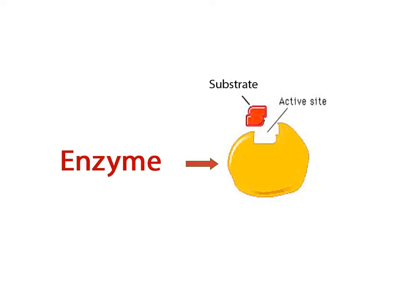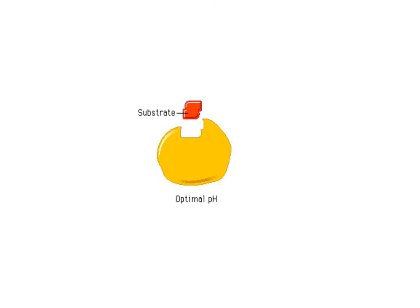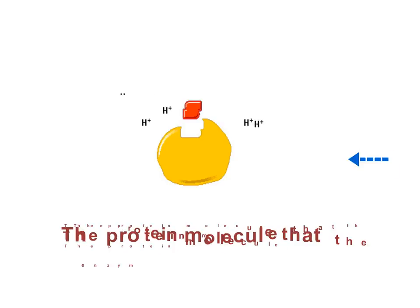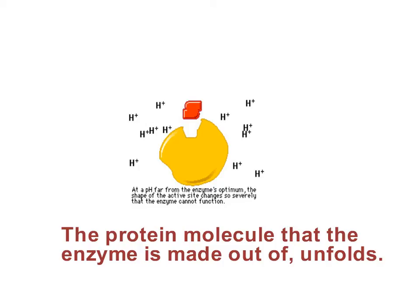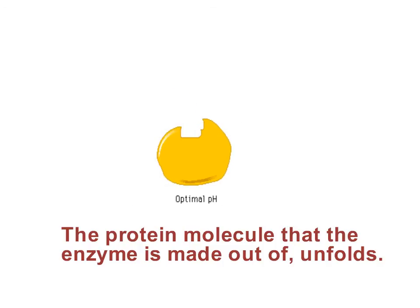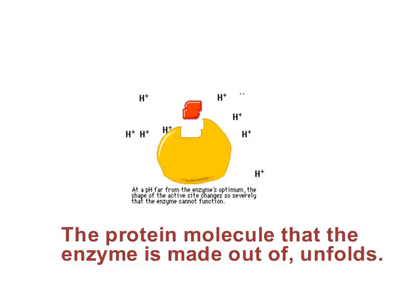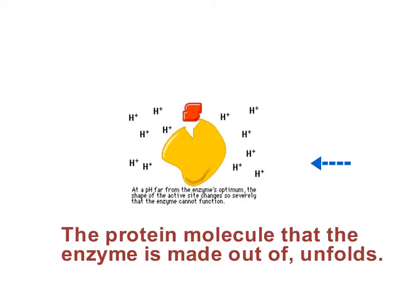Enzymes in the stomach function optimally at a pH of about 2. If the pH level of the stomach were to change to a pH of, say, 6, the enzyme would be destroyed and no longer function. It is the same for the enzymes that function in the small intestine. They function optimally at a pH of about 8.5. If the pH of the small intestine were to change to a pH of 5, these enzymes would also be destroyed and no longer function.